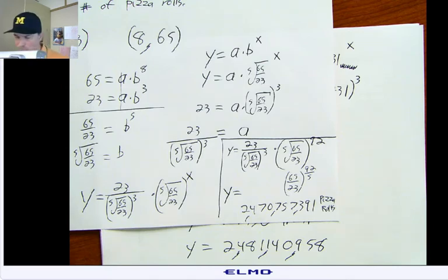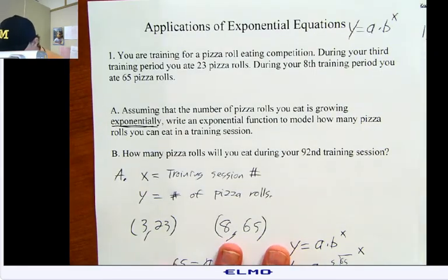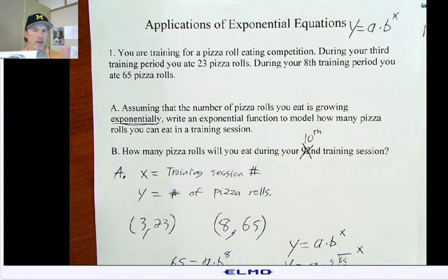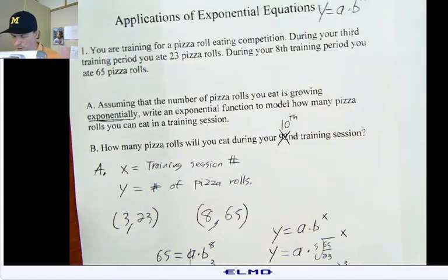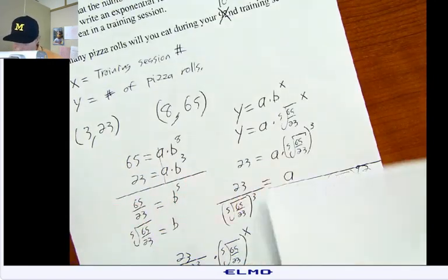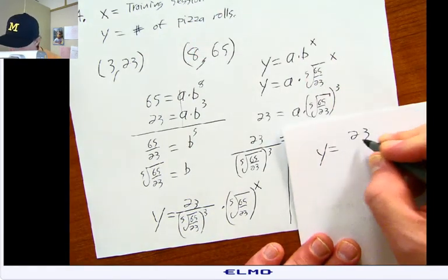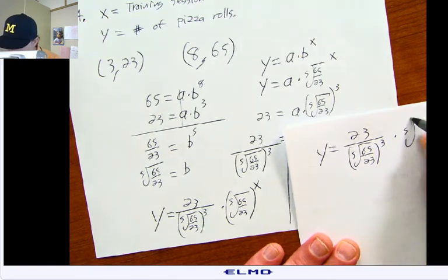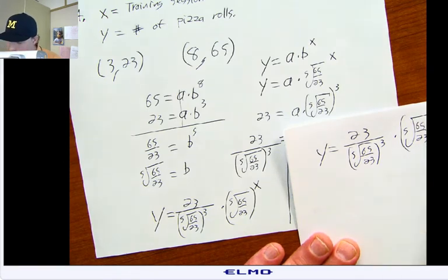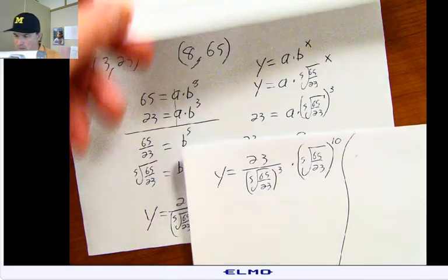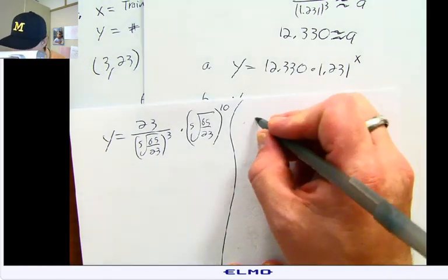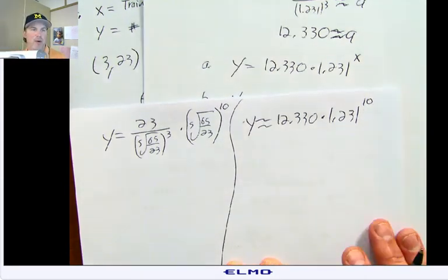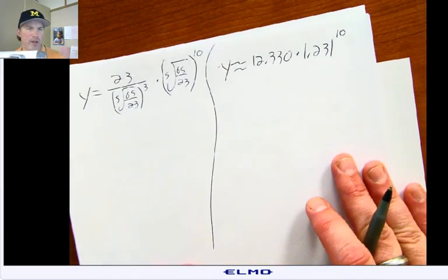I want to do this last step of this problem. 92 is way too big. What if it said something like, it gave me the 8th training session. What if instead it said 10th training session? This is just working the calculator. And this is fluff, everybody. If you do not need this stuff, I would stop watching if I were you. But if we went with the exact answer and we plugged 10 in, I would have 23 over the 5th root of 65 over 23 raised to the 10th.